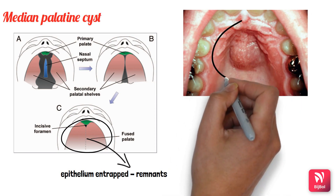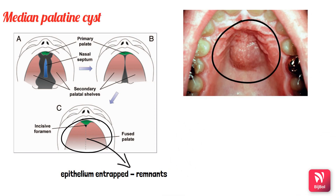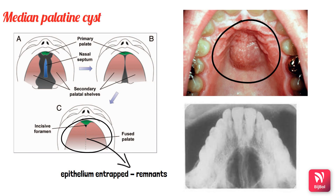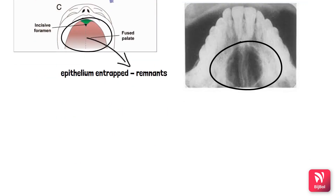Clinically, the median palatine cyst is present along the midline of the hard palate as a firm and fluctuant swelling, usually asymptomatic. Radiographically, it presents as a well-circumscribed radiolucency with a sclerotic border, usually in the midline of the palate opposite to the bicuspids and molars.